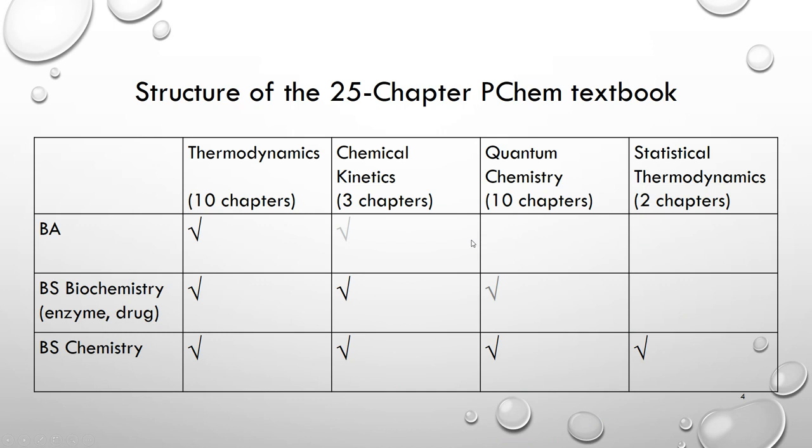There are a total of 25 chapters in the book: 10 chapters on thermodynamics, three chapters on chemical kinetics, 10 chapters on quantum chemistry, and then the last two chapters on statistical thermodynamics. There are BA in chemistry degree at Central Washington University. So I like those students to study thermodynamics and hopefully some chemical kinetics. We also have BS biochemistry and BS chemistry. For BS biochemistry students, I hope at least they see some enzyme kinetics and some kinetics of drug metabolism. That's why I put this chemical kinetics right after thermodynamics instead of at the end of the book.